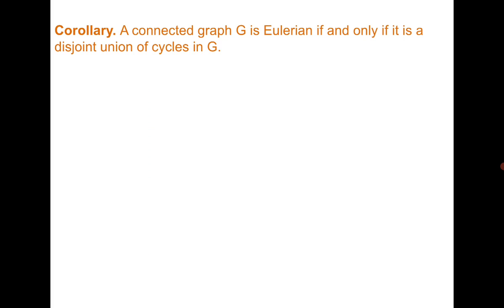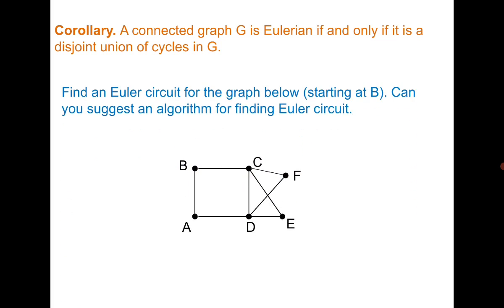From this part, it can be easily concluded that the graph is Eulerian if and only if it is a disjoint union of cycles in G. In the next class, you can try to think over this problem which we are going to discuss. Find an Eulerian circuit for the following graph starting at vertex B and think of another algorithm to find the Eulerian circuit. Thank you.